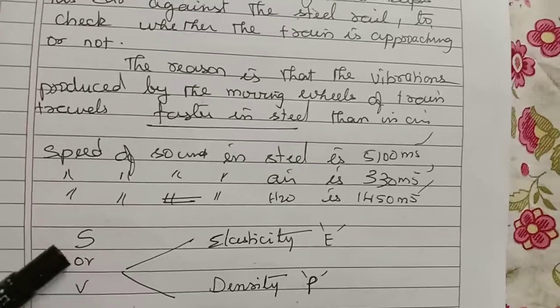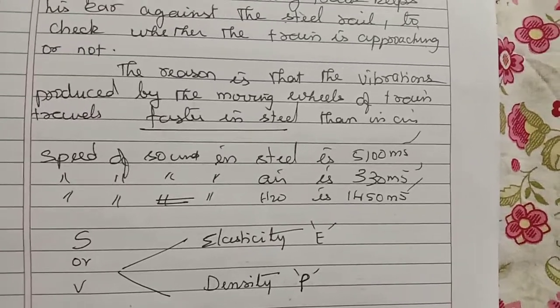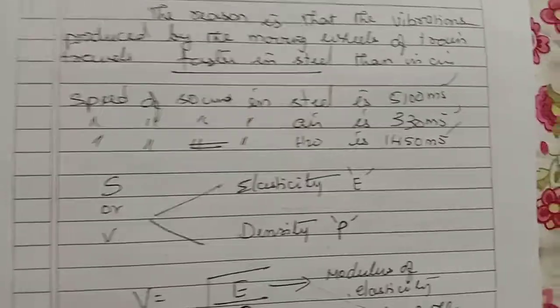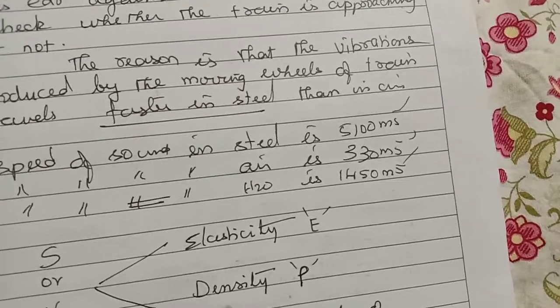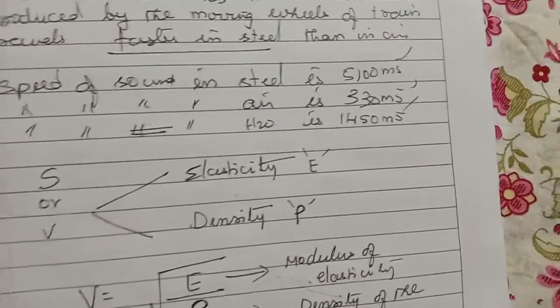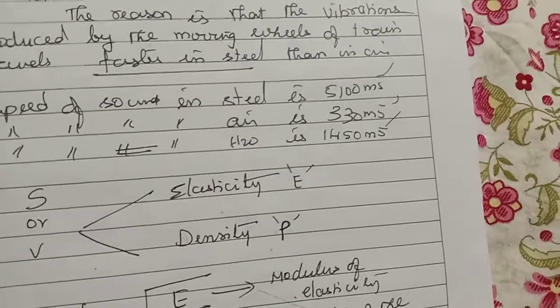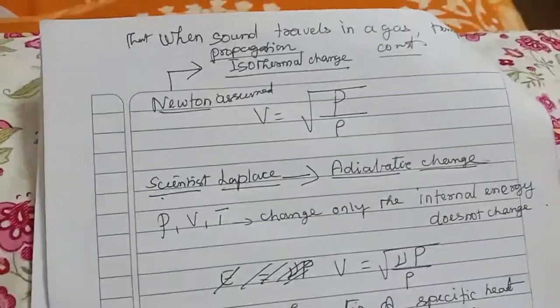Now let us understand that the speed or velocity depends on two characteristics: elasticity E and density rho. Based on this, you connect these three: velocity, elasticity, and density. If you connect these three, you get a formula. V equals square root of E by rho, where E is called the modulus of elasticity and rho is the density of the medium. This is the basic formula which is connecting.